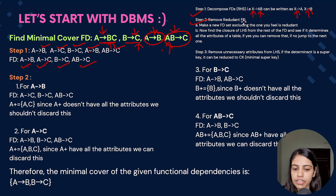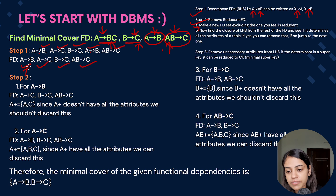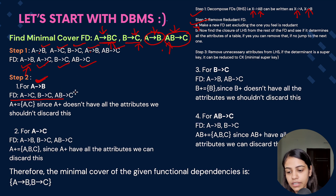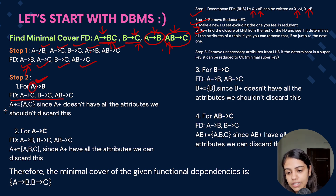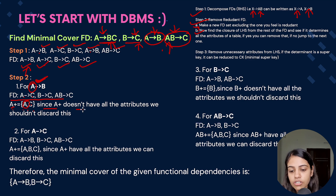Step two: remove the redundant functional dependencies. We go one by one. First, assume A determines B is redundant. The new set excluding it is: A determines C, B determines C, and AB determines C. We find the closure of A from this new set — A closure gives us A and C, but not all attributes. Since A closure does not have all the attributes, we should not discard A determines B.